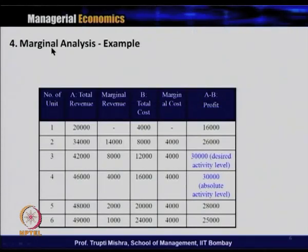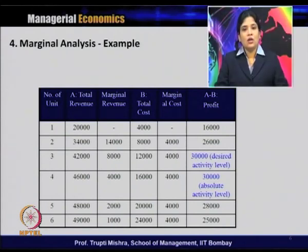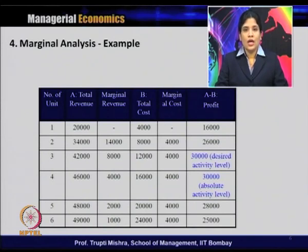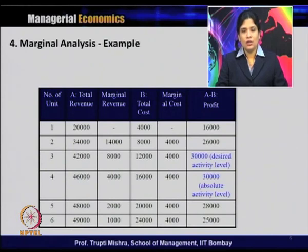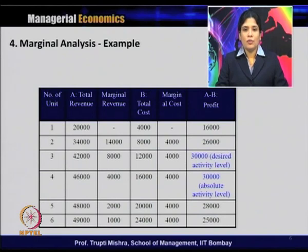We will take an example to understand marginal analysis using a hypothetical table. There are 6 units of output: 1, 2, 3, 4, 5, 6. The second column gives total revenue, the third gives marginal revenue, the fourth gives total cost, the fifth gives marginal cost, and the last gives profit. Total profit equals total revenue minus total cost. For one unit of output, total revenue is 20,000 and total cost is 4,000. Since there is only one unit, there is no marginal revenue associated with it. For two units, total revenue is 34,000 and marginal revenue is 14,000 — the difference between the second and first unit's total revenue.